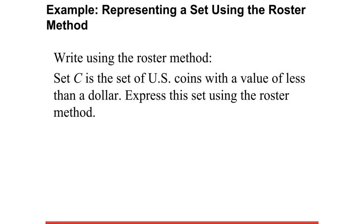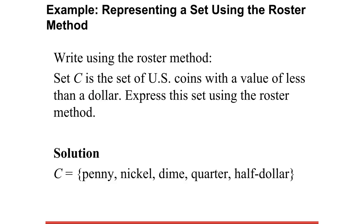Now let's write using the roster method. Suppose C is the set of U.S. coins with a value of less than a dollar — express this using the roster method. So C = {penny, nickel, dime, quarter, half dollar}. These are the coins whose values are less than a dollar. When using the roster method, use braces to enclose your elements and commas to separate them. Do not use semicolons or colons to separate members of the set.